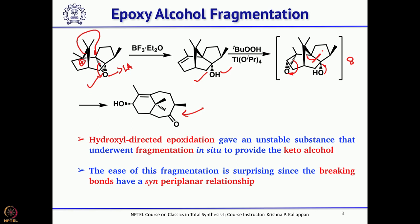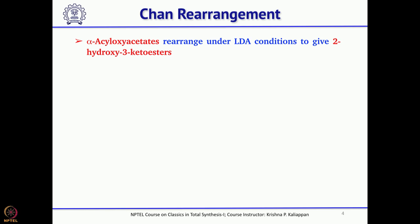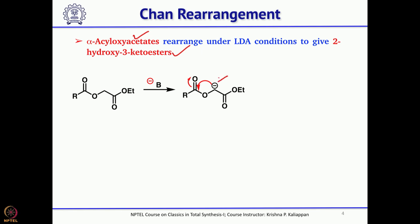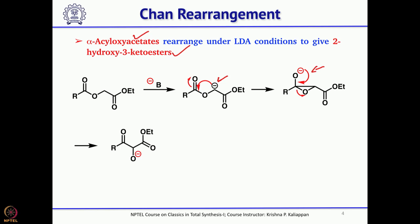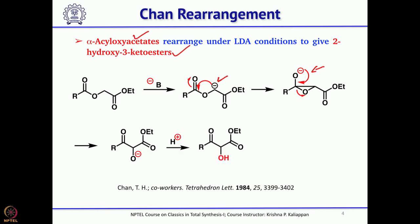Let us see the overall retrosynthesis for the total synthesis of Taxol using this rearrangement as the key reaction — how Holton has cleverly constructed the retrosynthesis. He also used the Chan rearrangement to obtain 2-hydroxy-3-keto esters from alpha-acyloxy acetates. When you have alpha-acyloxy acetates and treat with base, an anion is generated and immediately attacks the carbonyl group to form an epoxide. The O-minus then opens the 3-membered epoxide to give alpha-hydroxy-keto esters. This is another key reaction used cleverly in the synthesis.